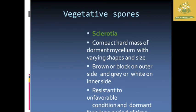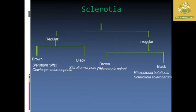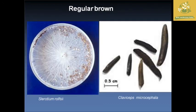Now we are going to see about vegetative structures, starting with sclerotia. Sclerotia are compact, hard masses of dormant mycelium, present in variable sizes and shapes. They are brown or black on the outer side, or grey with white on the surface. They are mainly resistant to unfavorable conditions and are released from dormancy once favorable conditions return. Pictures and examples of the different types of sclerotia are provided.